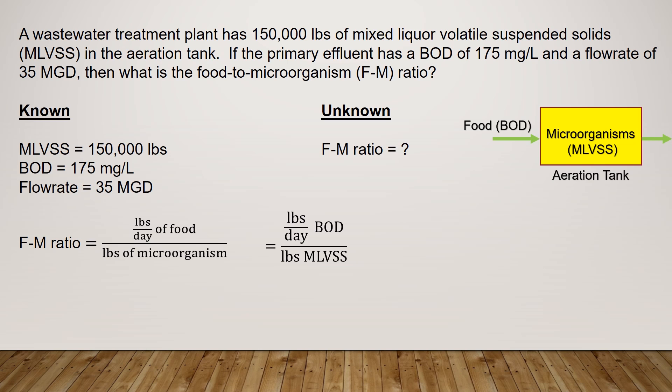Do we have pounds per day of BOD going into the aeration tank? Looking under the knowns, we have the BOD in mg per liter, but not pounds per day. For the bottom of the formula, it says pounds of MLVSS — and under the knowns, we have MLVSS as 150,000 pounds, so we can plug that in on the bottom.